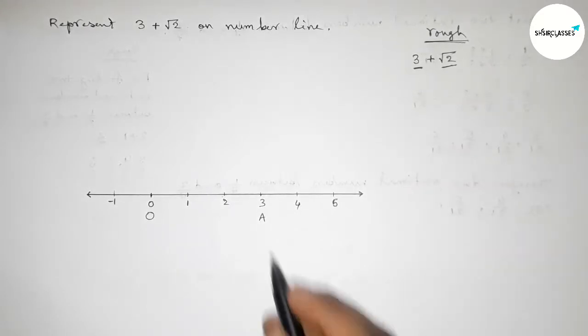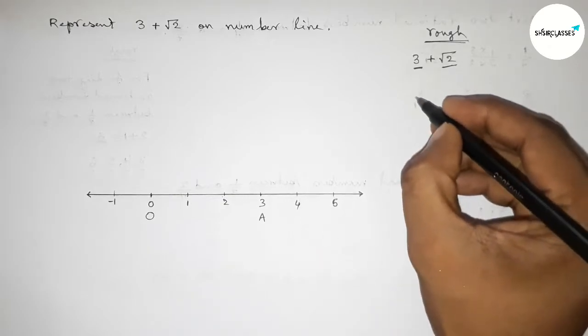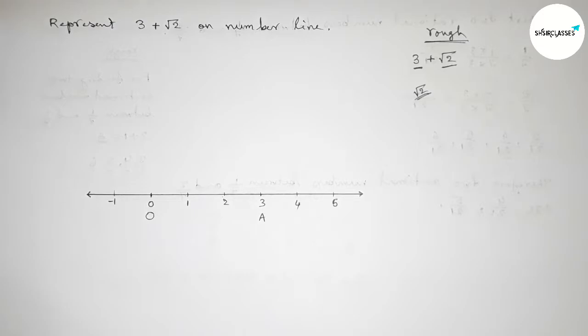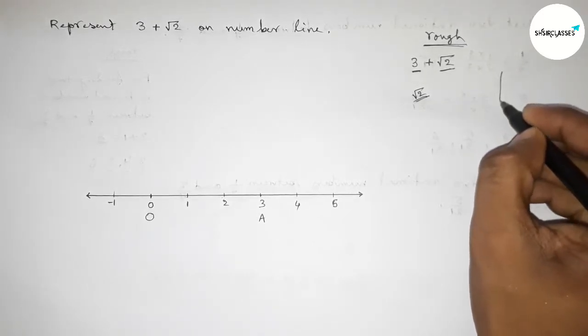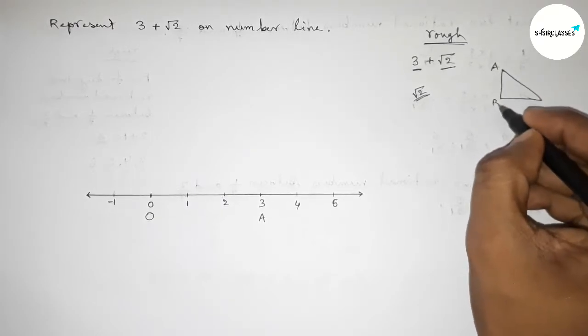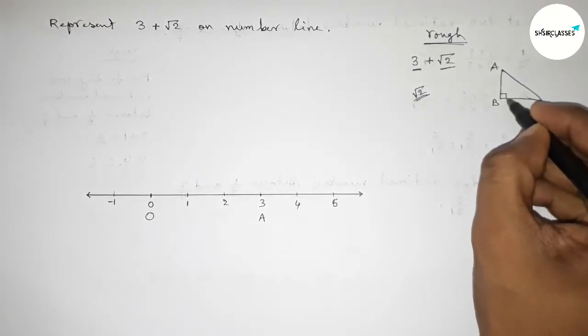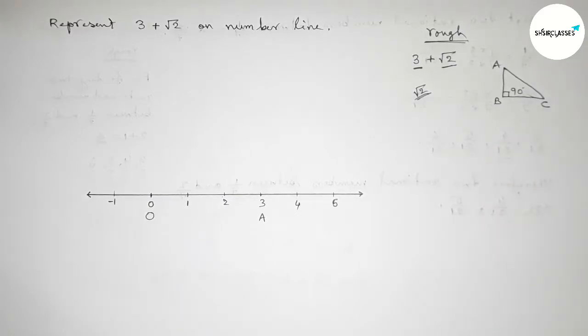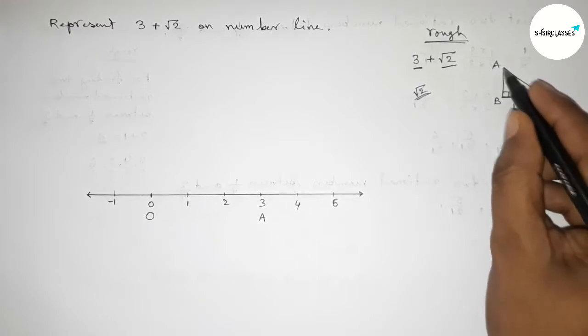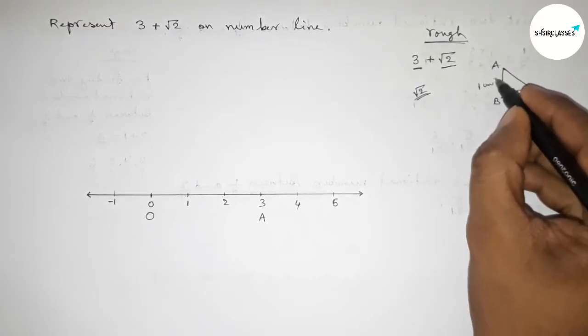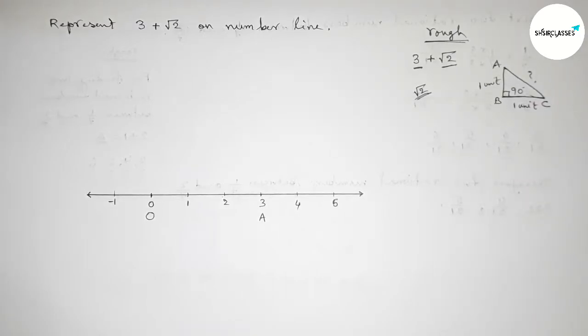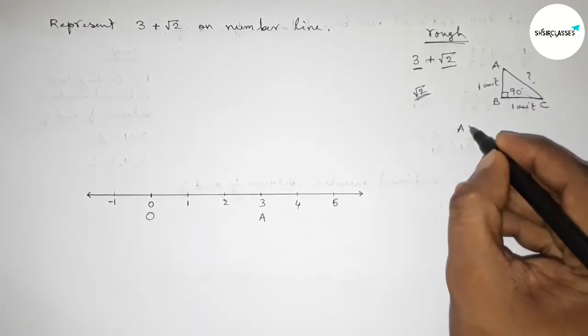Next, represent root 2 from point 3 to this side. Now discuss how to construct root 2. First, roughly draw a right triangle ABC with a 90-degree angle here. If we take the base equal to 1 unit length and the perpendicular equal to 1 unit length, then what is the hypotenuse?